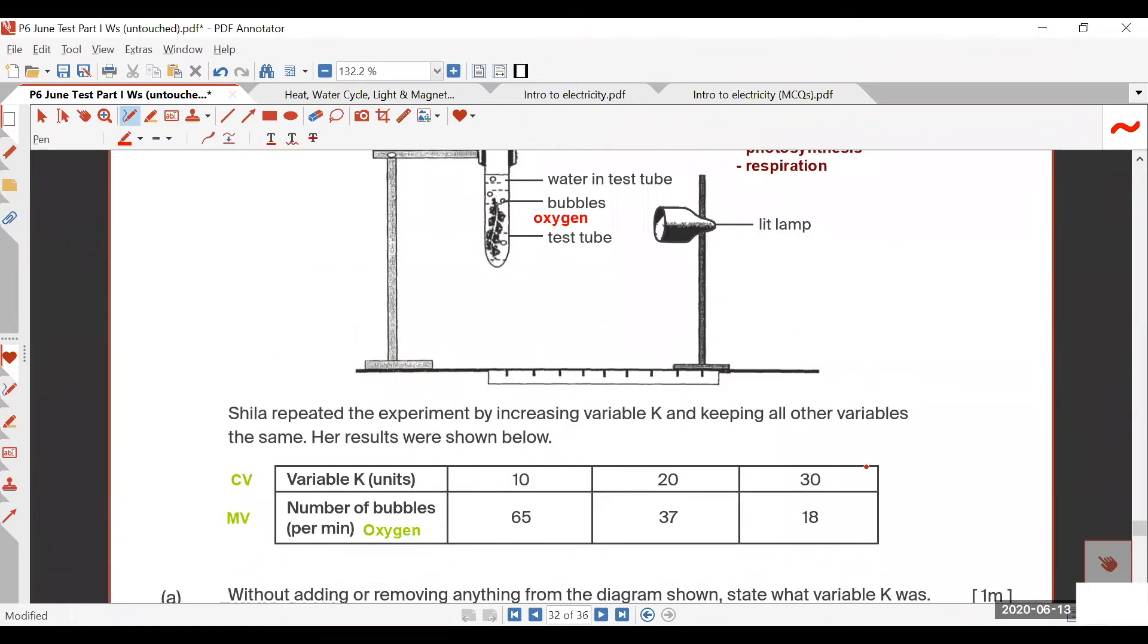How come my variable K increases 10, 20, 30, then my number of oxygen bubbles produced decreases? Is variable K the distance between the test tube and the lamp? Yes, correct. Because why? The further the greater the distance...